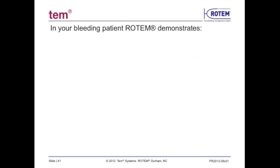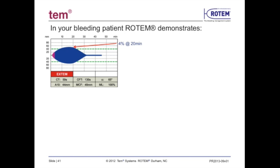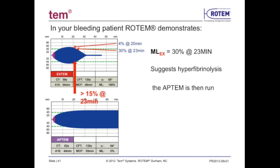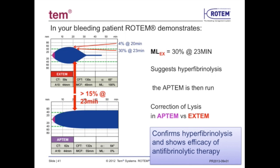In this example, the patient is bleeding because the clot is not sustainable. After about 20 minutes, there is evidence of early clot lysis — the ML at 20 minutes is about 4% and at 23 minutes it is 30%. A 15% or greater ML value is a positive indicator for hyperfibrinolysis. When the Aptem test is run, the hyperfibrinolysis is corrected in the sample, indicating how the patient will respond to anti-fibrinolytic therapy and whether additional transfusion therapy might be required.